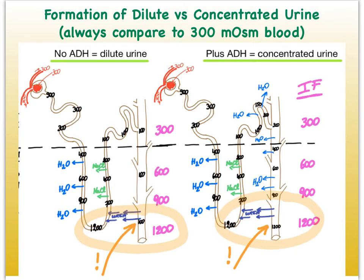On the other hand, if ADH is present, then we're going to see that this already dilute filtrate in the distal convoluted tubule can now lose more water, because ADH will allow for the building of aquaporins in the distal convoluted tubule and even along the length of our collecting ducts. Therefore, the filtrate will go from 100 in the distal convoluted tubule all the way to possibly 1200 — the same osmolality as deep within the interstitium of the medulla. So we can actually produce an extremely concentrated urine as long as antidiuretic hormone is present.